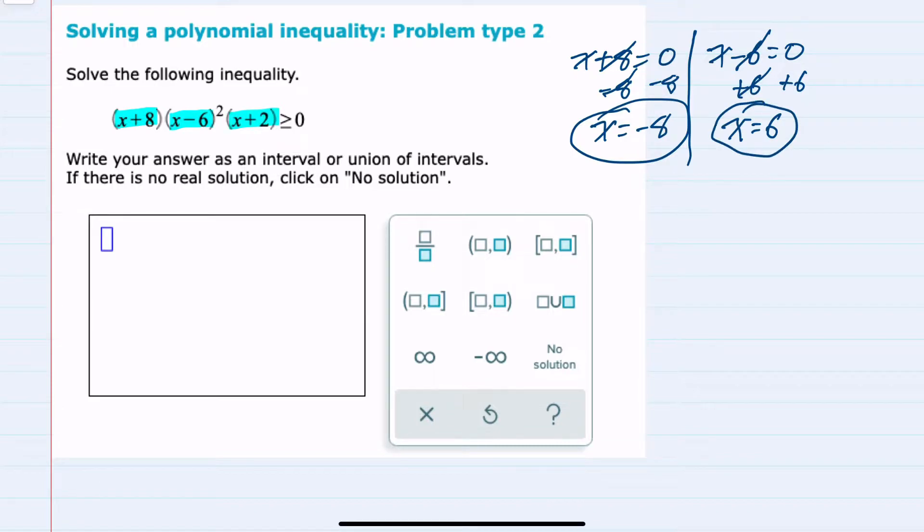And then the third factor, x plus 2, setting that equal to 0 and solving for x by subtracting the 2 over gives us x equals negative 2.